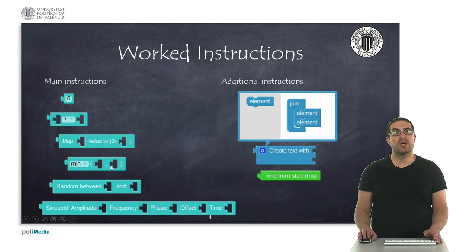Also here, with this instruction, we can compute the maximum or the minimum of two numbers, and we return the corresponding result. This instruction will generate a random number between two integral numbers. And this last instruction will allow us to generate a sinusoidal wave.